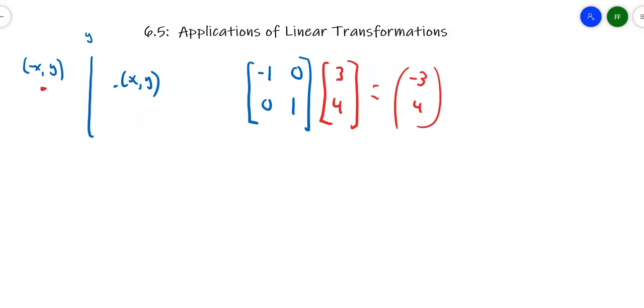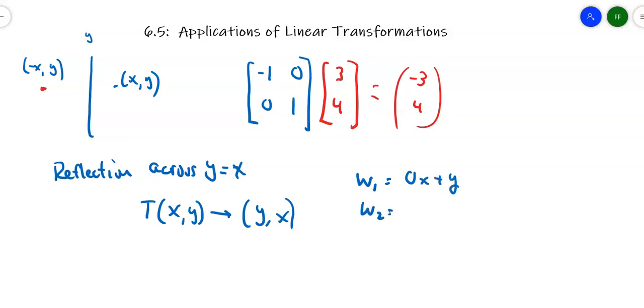What if I want to do a reflection across y equals x? In other words, I want a matrix that will produce the inverse of a function. That means we're doing a transformation that maps x, y onto y, x. When you reflect across y equals x, you change the coordinates. So if you think of it this way, w1 is going to be no x's plus a y, and w2 is going to be 1x and no y's. So now we're switching the x's and y's. We're not just changing the signs like we did up here. We're actually switching their positions. So a transformation matrix might look like this, 0, 1, 1, 0. In other words, we took the rows in the identity matrix and we flipped them.